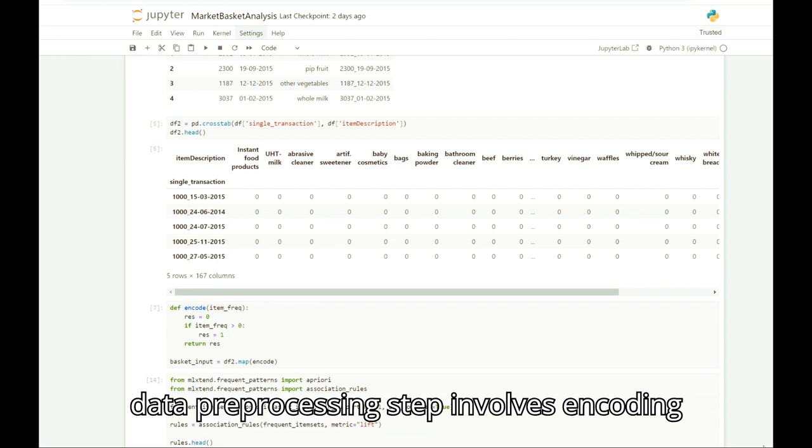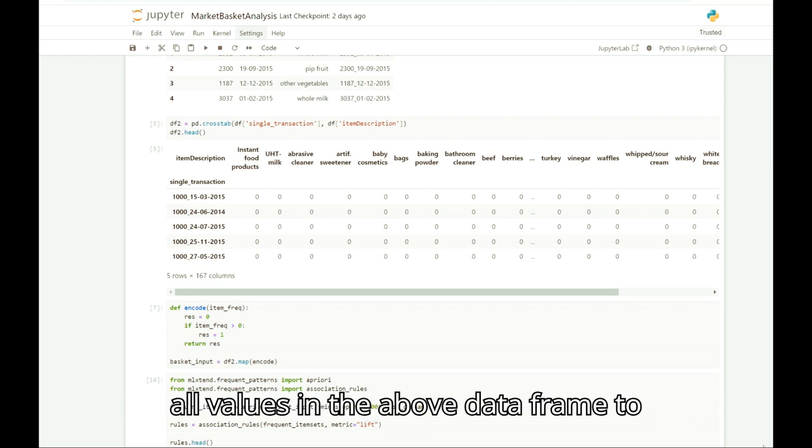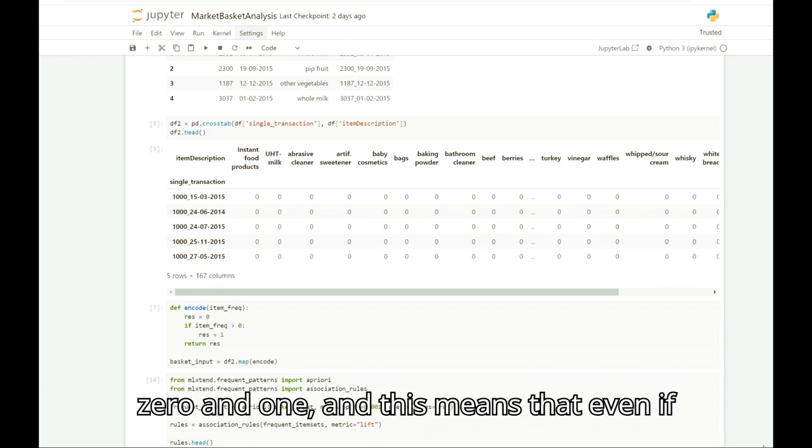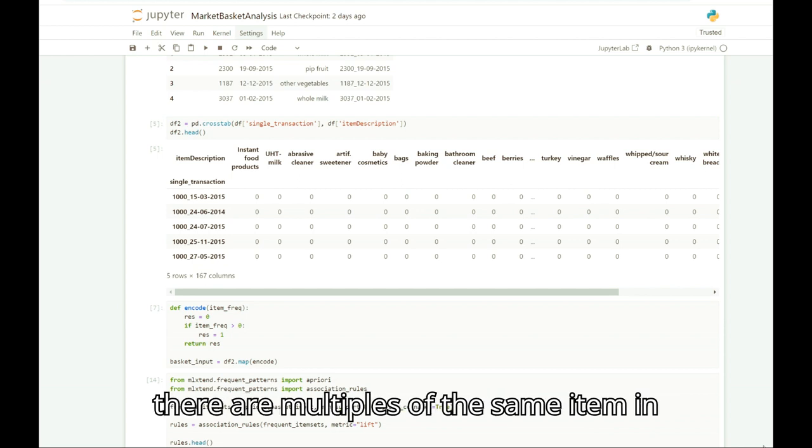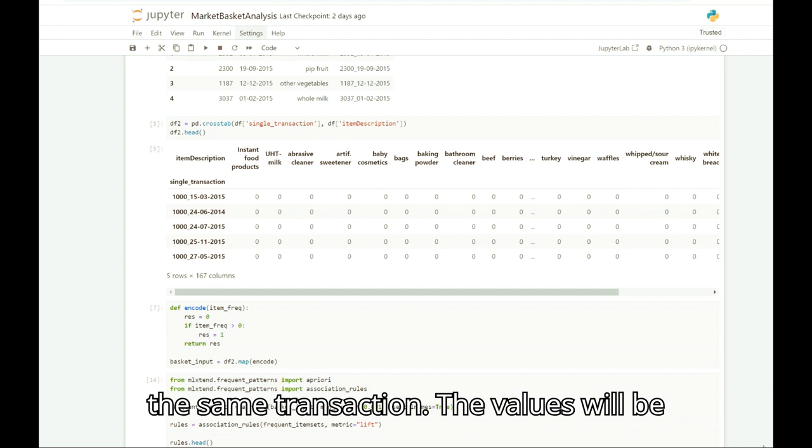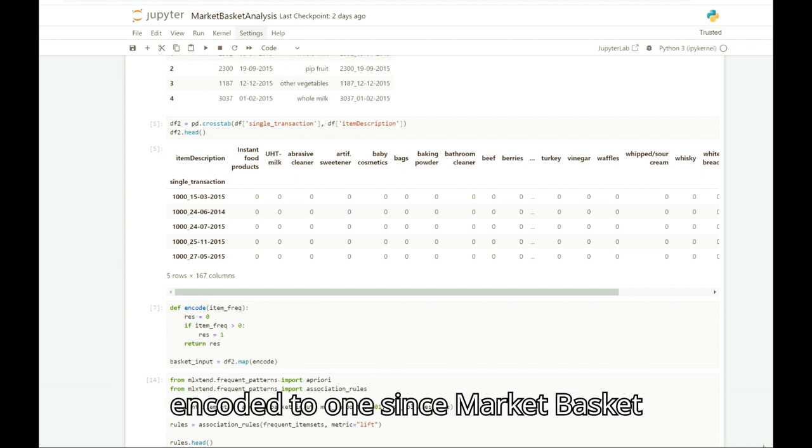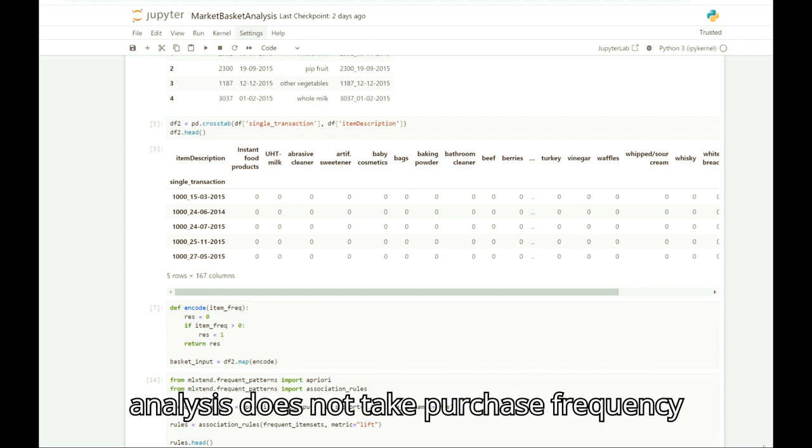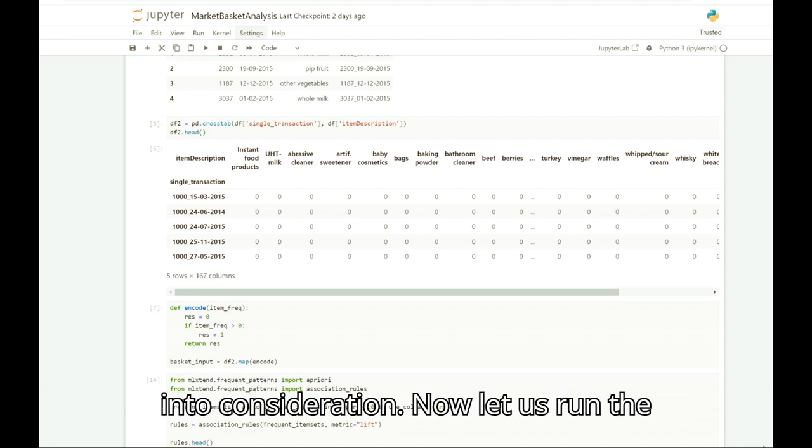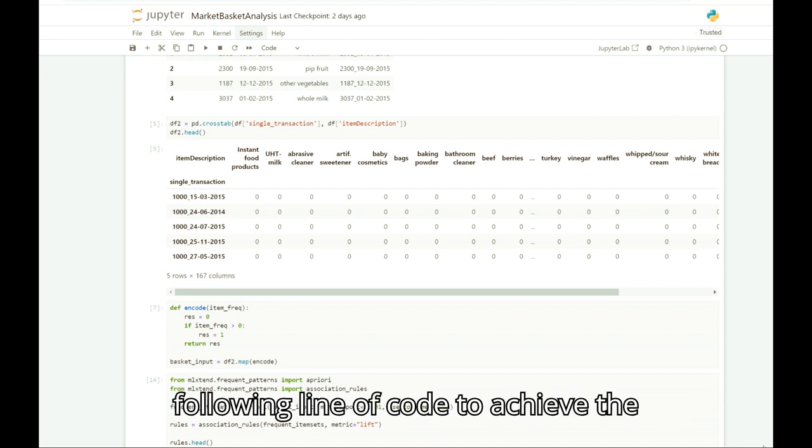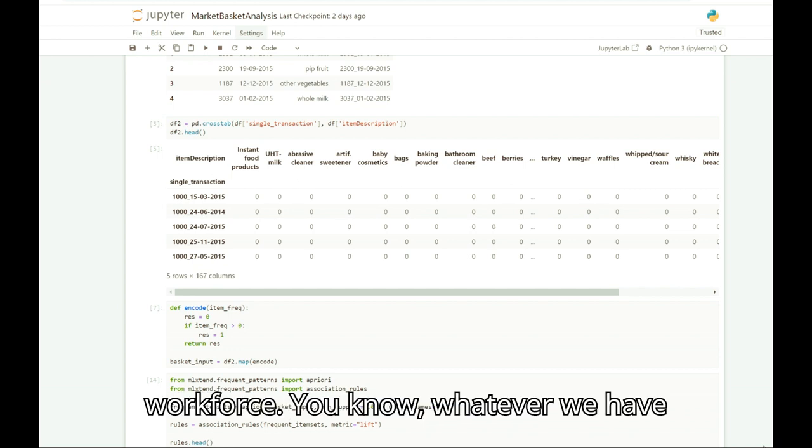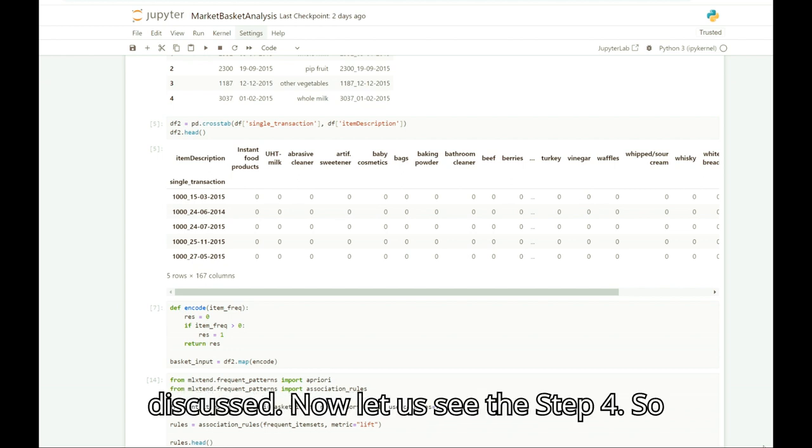The final data pre-processing step involves encoding all values in the above dataframe to zero and one. This means that even if there are multiples of the same item in the same transaction, the values will be encoded to one, since market basket analysis does not take purchase frequency into consideration. Now let us run the following line of code to achieve what we have discussed. Now let us see step four.